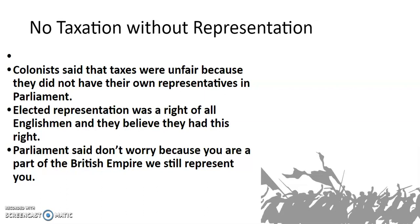Elected representation was a right of all Englishmen, codified in English law going back to the Magna Carta, and colonists believed they had the same right even living in America. Parliament responded by saying the colonies were part of the British Empire and therefore represented — but this was essentially like saying someone from Pennsylvania could represent everything a person in Hawaii wanted. It wasn't fair, it wasn't true representation, and it set the colonists on the path to rebellion and war.